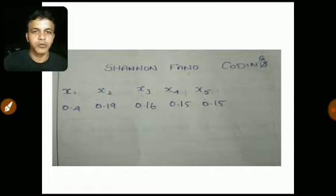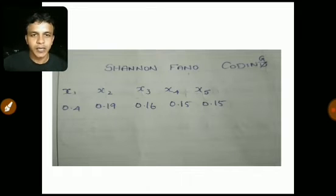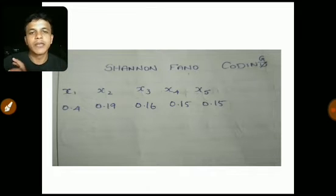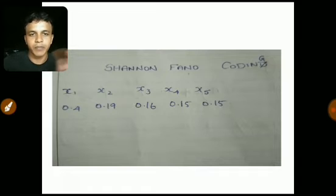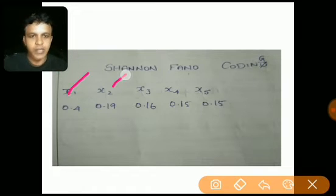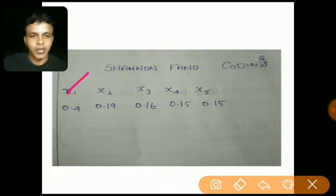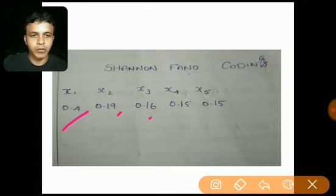In this example, there is a source which is emitting signals and there are five symbols emitted by that source. The symbols are x1, x2, x3, x4, and x5, with probabilities 0.4, 0.19, 0.16, 0.15, and 0.15 respectively.